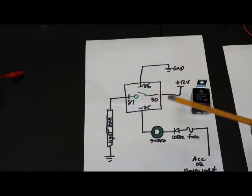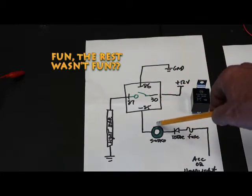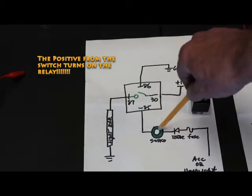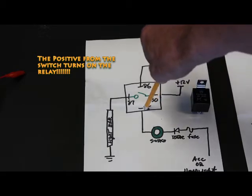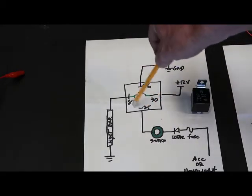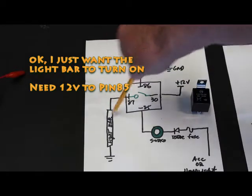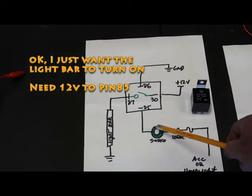Now, here comes the fun part. You'll take and put a switch in line here, and that switch needs positive voltage to turn this number 85 on and activate the relay and turn the voltage from 12 volts here to the light bar. So what we did is we took and put a switch in line.